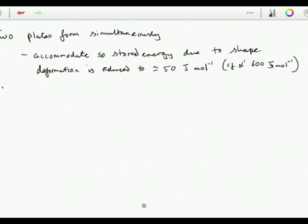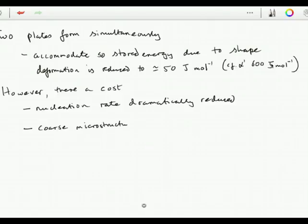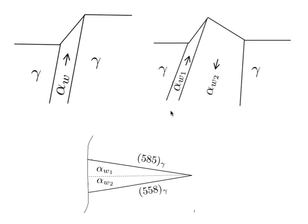However, there is a cost. The nucleation rate is dramatically reduced because you have to form these self-accommodating plates simultaneously. The consequence of this is that you end up with a coarse microstructure, which can be bad for toughness. So if you are trying to make strong steels, this is something to avoid.